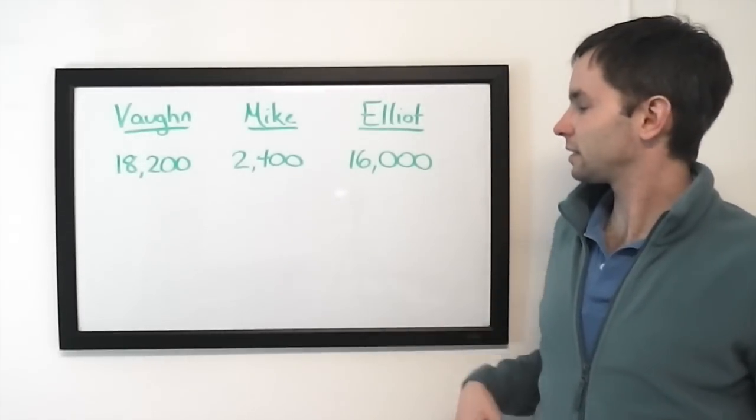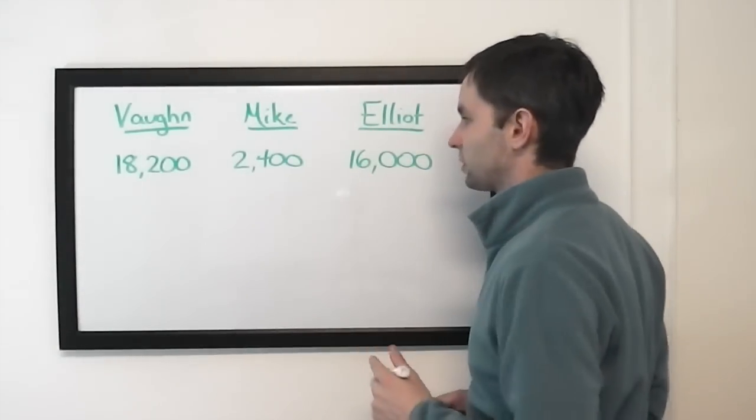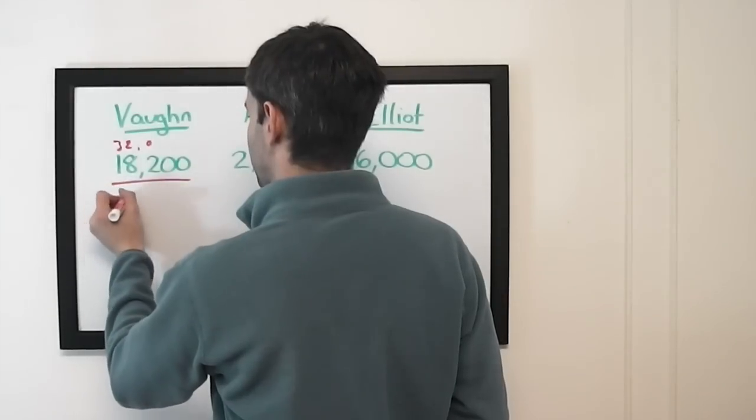Let's start with Elliott doubling up. So, first order, 16,000 doubled is 32,000, so for Vaughn to top that, that's 38.